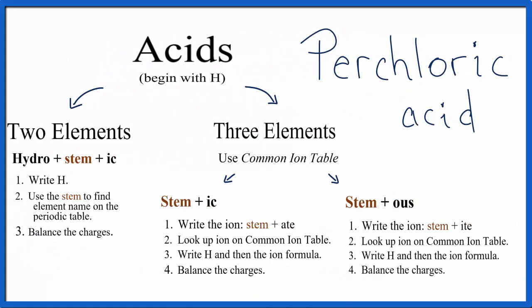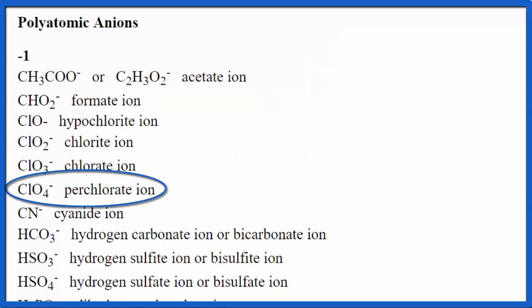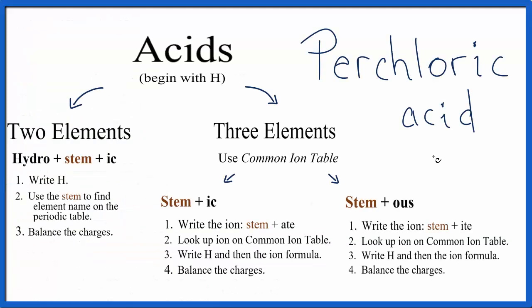Sometimes you'll see an acid like perchloric acid and you might not recognize the name. Don't be alarmed, we treat it just like any other acid. We see it ends in ic, doesn't begin in hydro, so we use these rules right here. We look up the perchlorate ion on the common ion table and there it is right there, ClO4 minus. So we write our ClO4 minus, we put H in front. We balance the charges, they're nicely balanced, and that gives us perchloric acid HClO4.